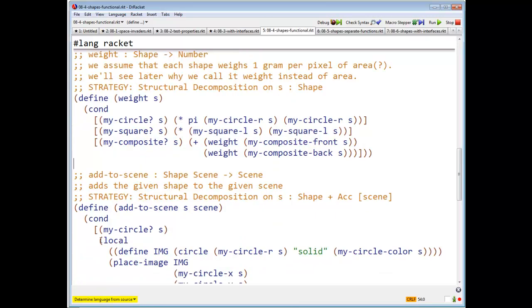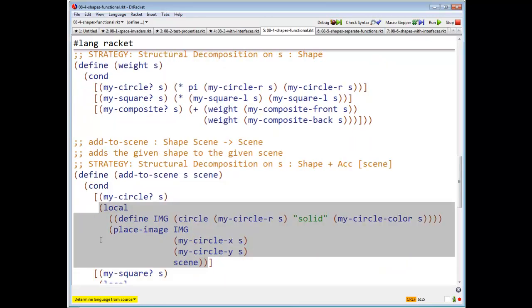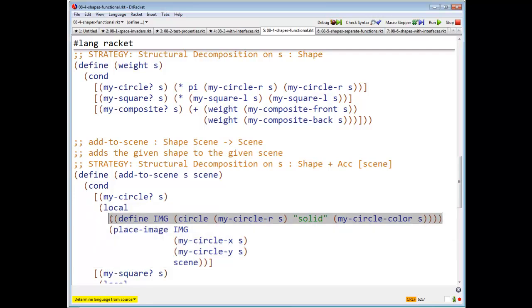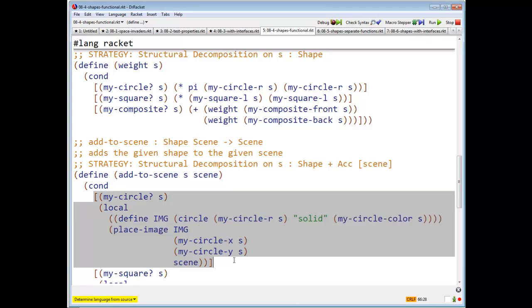Add to scene, well, let's see. I've done this slightly fancy. So if what I have is a circle, I'll say, eh, let's define the image based on the radius and the color of the circle.